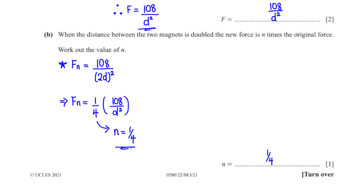When the distance between the two magnets is doubled, the new force is n times the original force. Work out n. The new force is 108 over (2d)² = 108 over 4d², which is (1/4) times 108 over d². Therefore n equals 1 over 4.